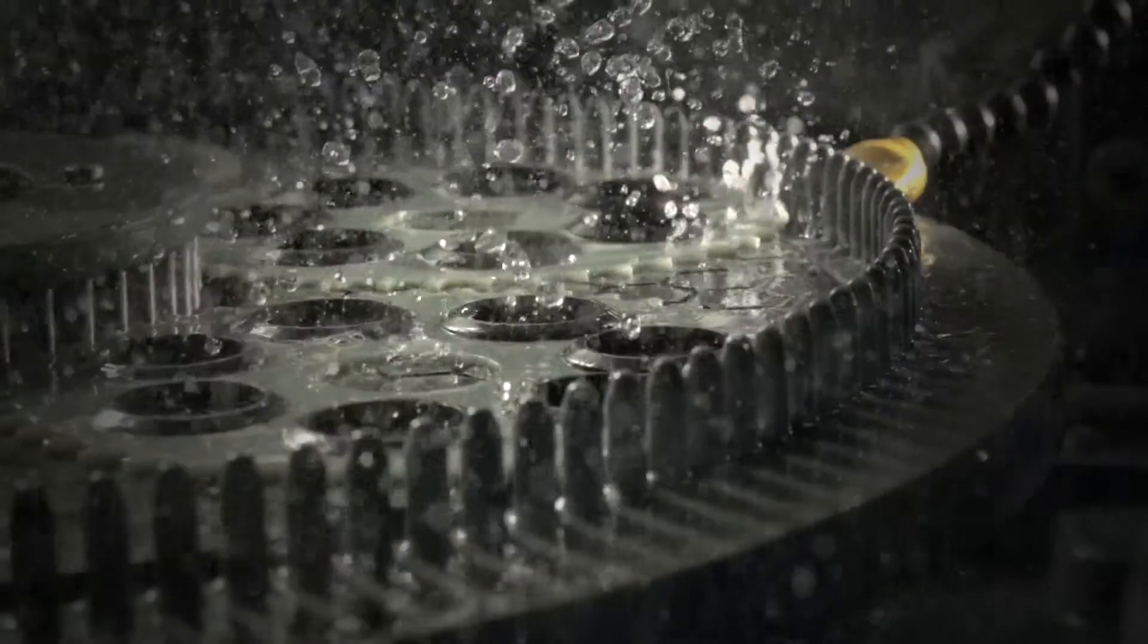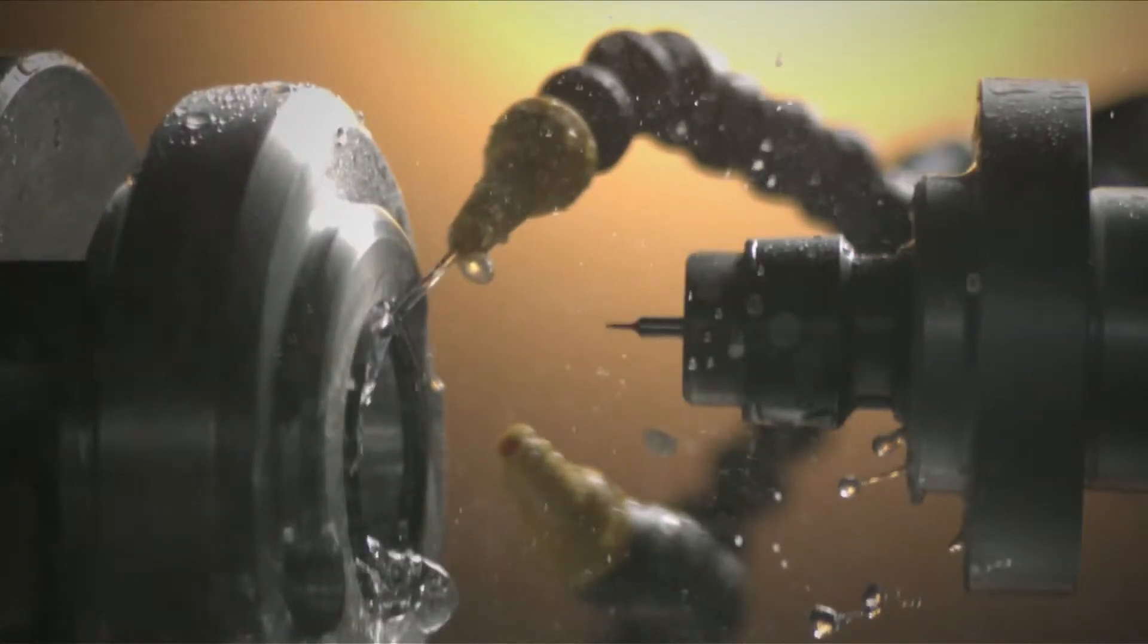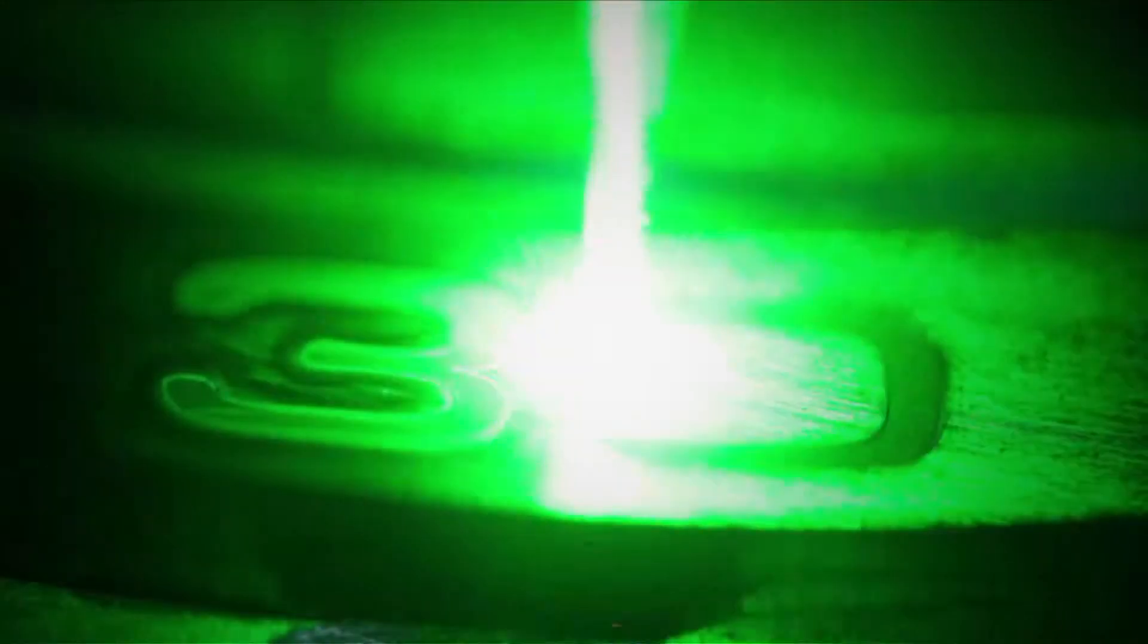The rings are then machined with diamond tools to obtain their precise geometry. The diving scale is engraved on the top surface of the rings using a high-performance laser.